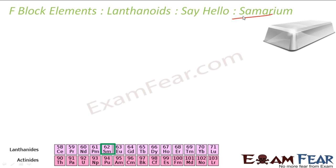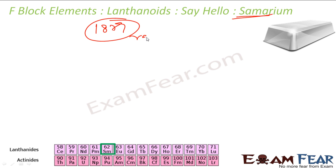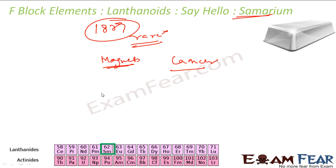Samarium is a very hard metal that readily oxidizes. It was discovered in 1879 and named after the mineral samarskite from which it was isolated. It is the 40th most abundant metal in the Earth's crust, so it is not rare. It is used to create powerful magnets and is helpful in treating cancer. Its electronic configuration is 4f⁶ 6s².